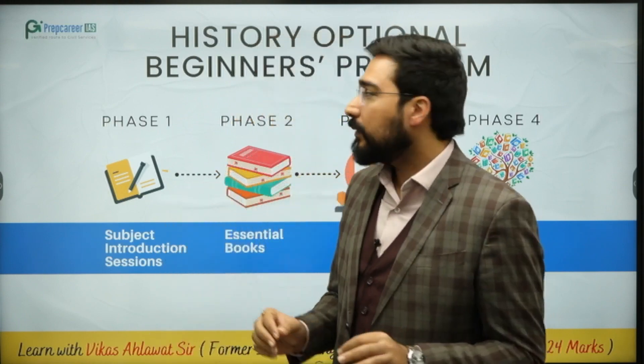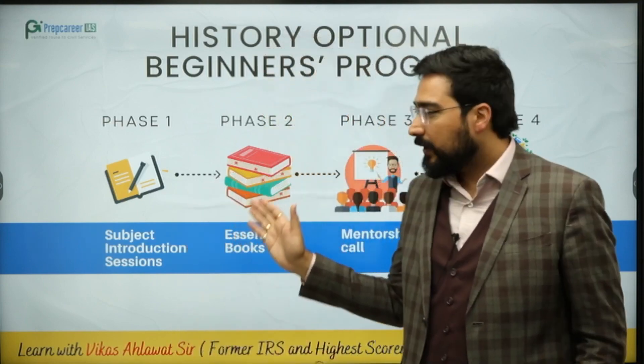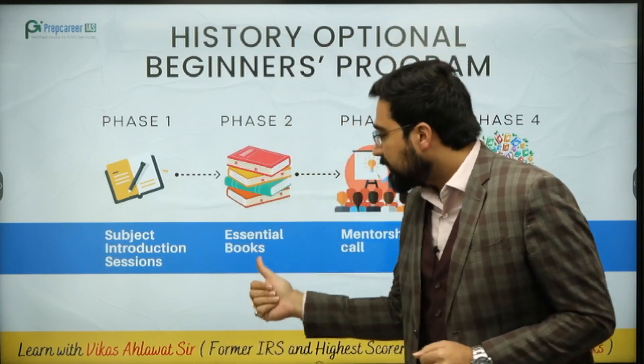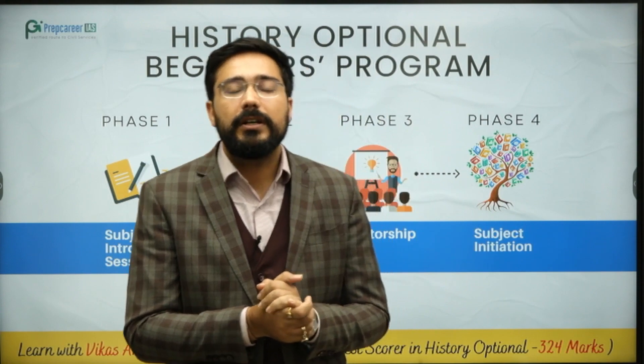I hope you have learned a lot from this video. Now there is a very important announcement for students who are preparing for 2025. We are coming up with a History Optional Beginners Program. When you start optional preparation there are a lot of questions — what are the book lists, what are the specific syllables, what are the four-stage programs? In the first stage, you will be given certain videos to understand all four parts: Ancient, Medieval, Modern, and World History. In the second part, you will be reading the essential books. In the third part, you will get a mentorship call. And fourth, you will be initiated into the subject preparation.